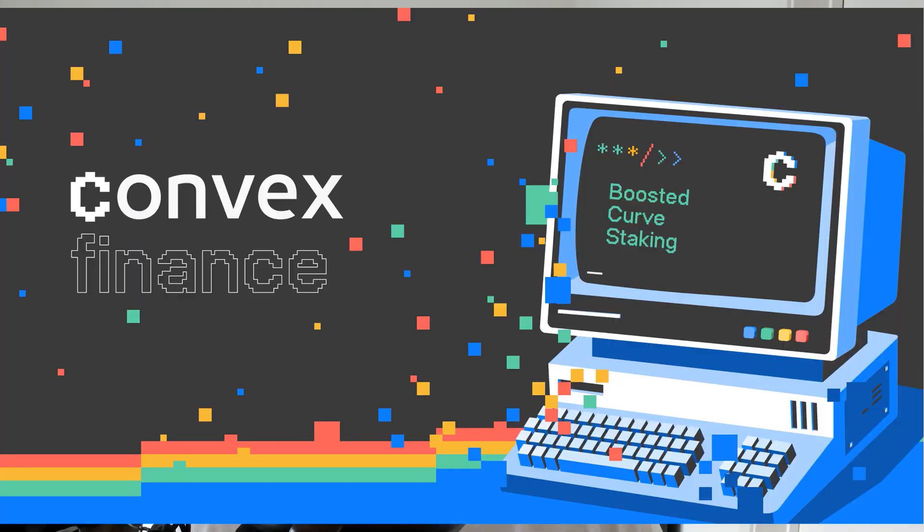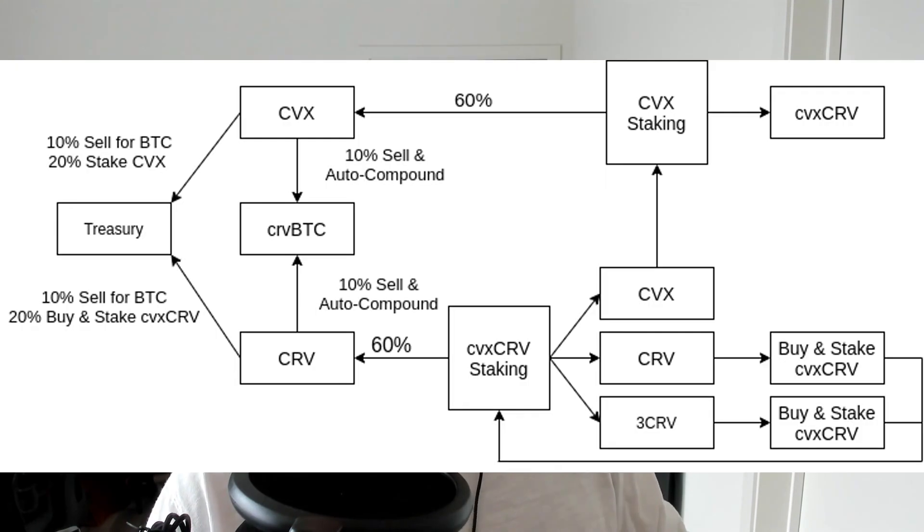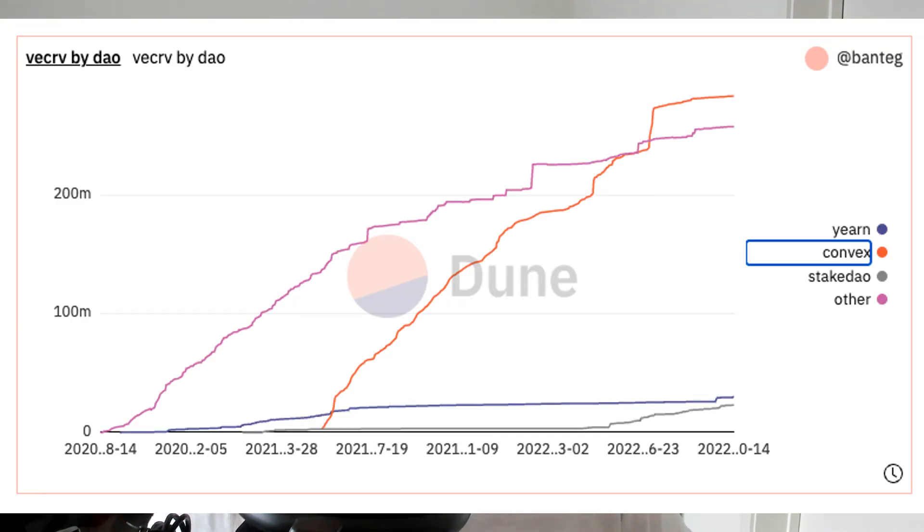For example, the money Lego on top of Curve is Convex Finance. It earns revenue from Curve liquidity providers who stake their LP tokens in Convex to leverage its enormous VE CRV holdings. They do this to maximize yield with no need to buy and stake their own VE CRV for four years. Convex charges a 20% maximum fee to LPs for this yield-boosting service.